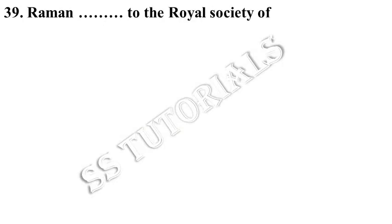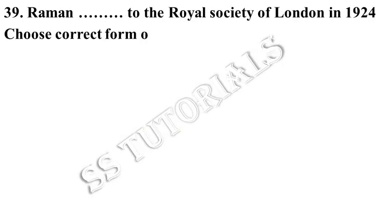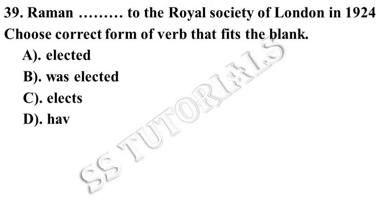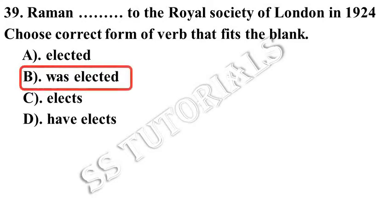Raman dashed to the Royal Society of London in 1924. Choose the correct form of verb that fits the blank. Answer: Was elected.